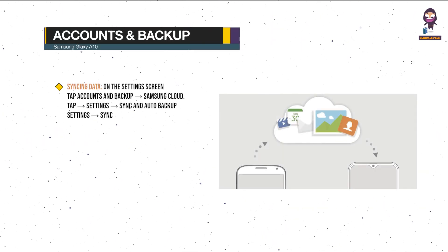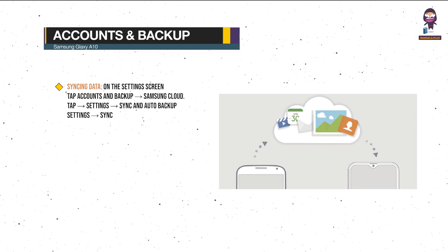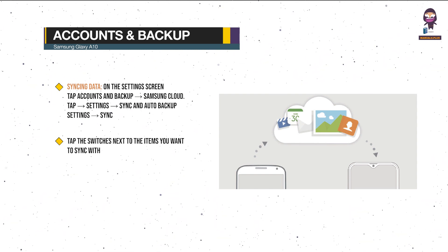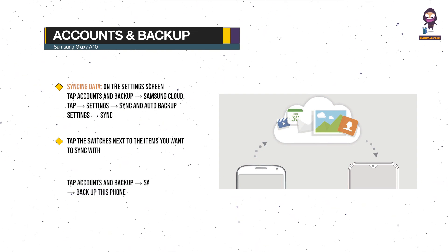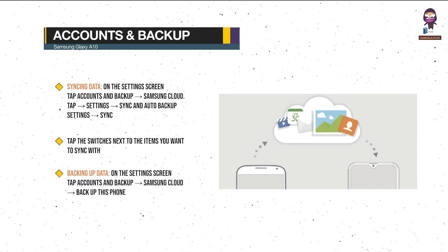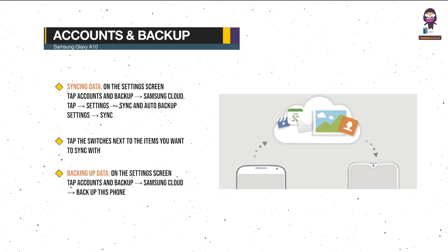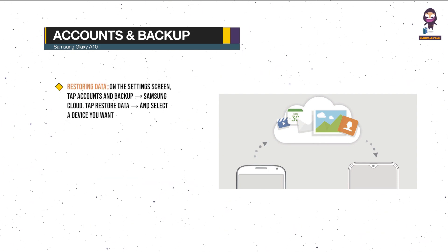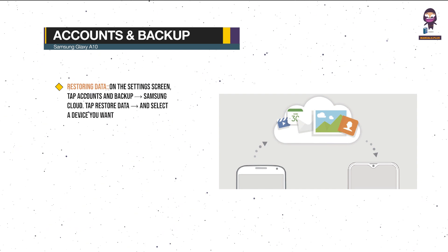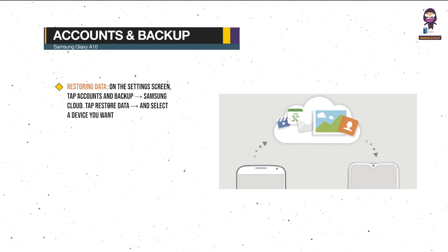Accounts and Backup — Syncing data: on the Settings screen, tap Accounts and Backup, Samsung Cloud. Tap Settings, Sync and Auto Backup Settings, Sync. Tap the switches next to the items you want to sync with. Backing up data: on the Settings screen, tap Accounts and Backup, Samsung Cloud, Backup This Phone. Tick items you want to backup and tap Backup, then tap Done. Restoring data: on the Settings screen, tap Accounts and Backup, Samsung Cloud. Tap Restore Data and select a device you want. Tick items you want to restore and tap Restore.